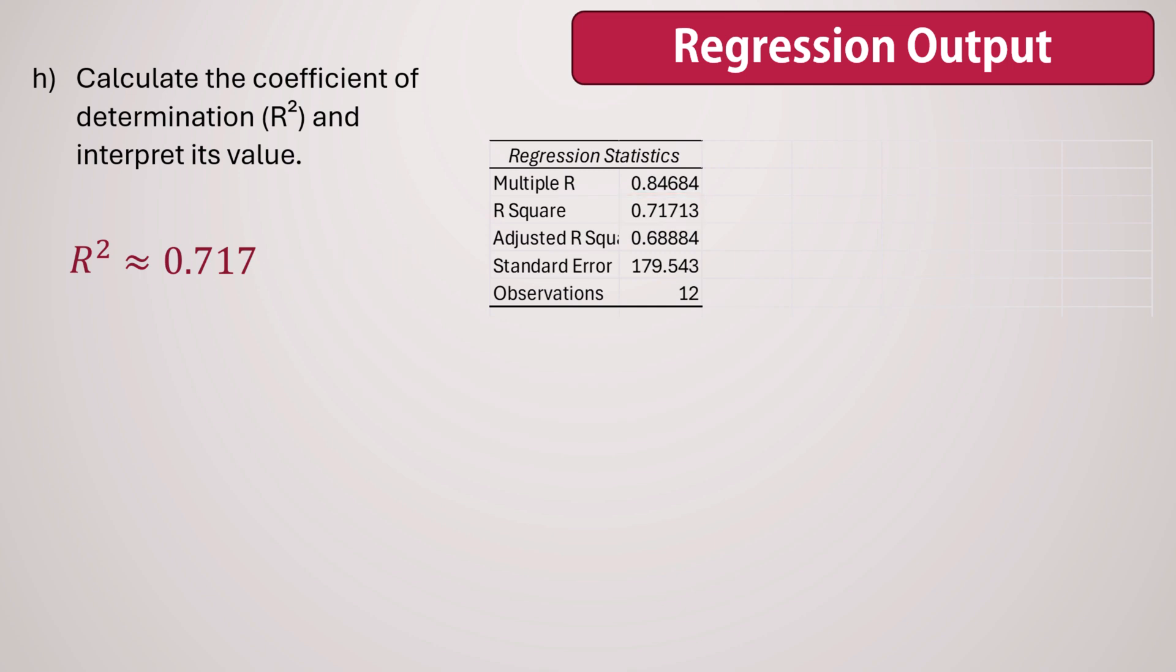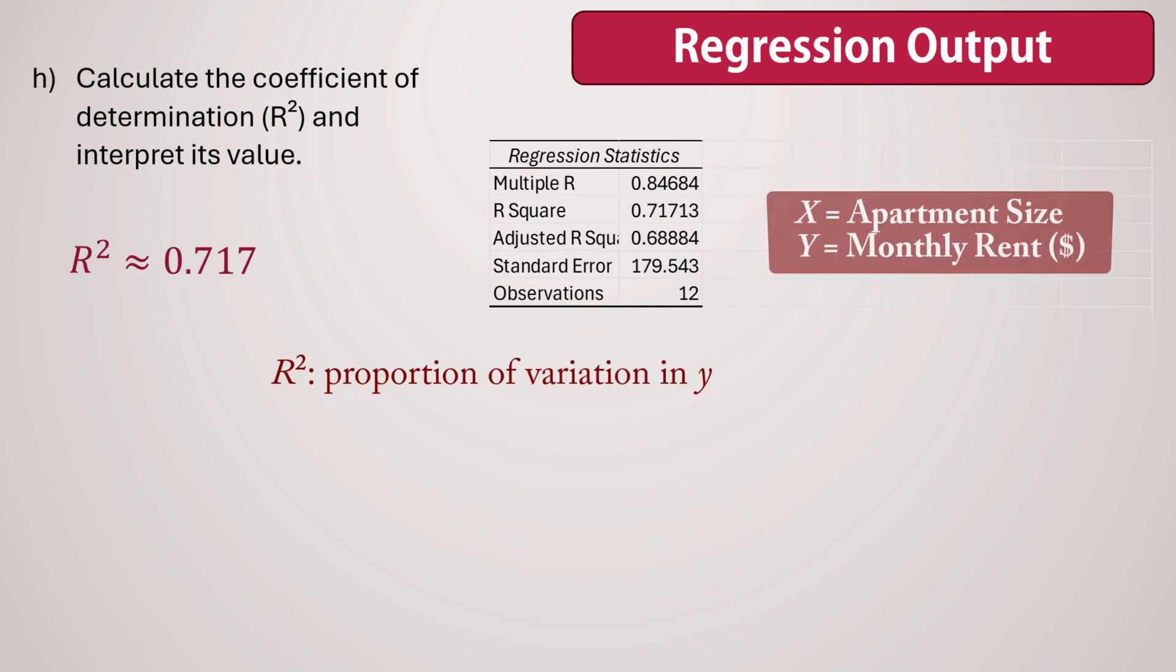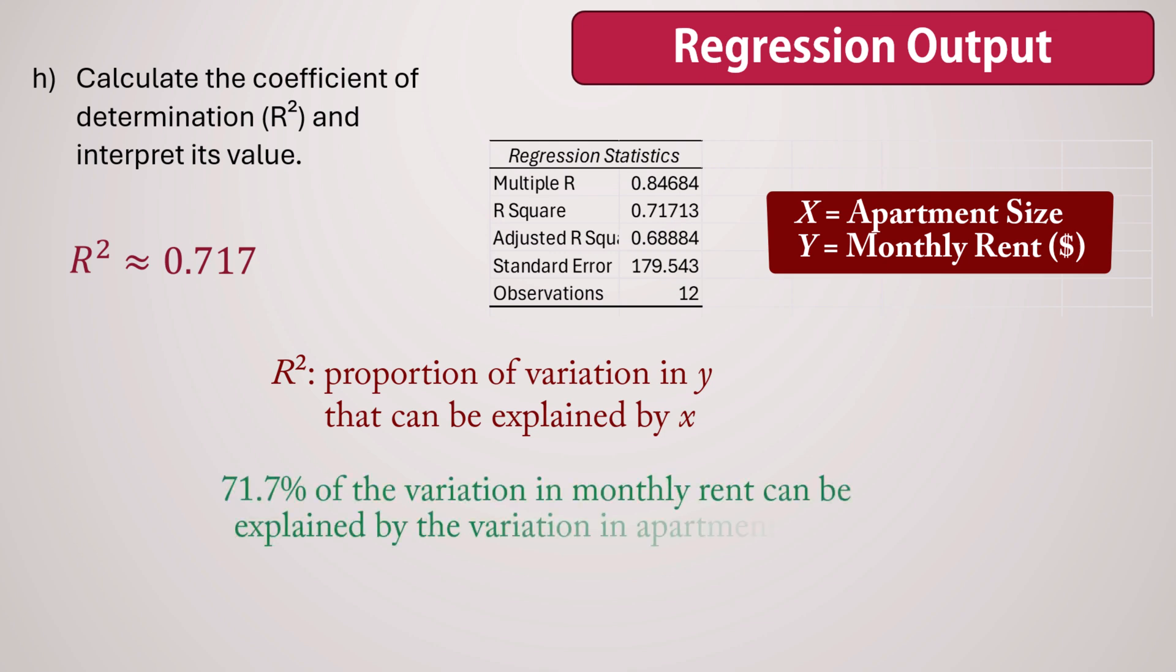The R² value tells us the proportion of variation in the dependent variable, in our case monthly rent, that can be explained by the independent variable, apartment size. That is, about 71.7% of the variation in monthly rent can be explained by the variation in apartment size.